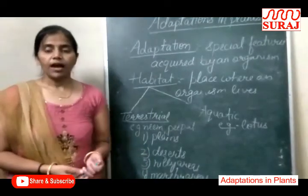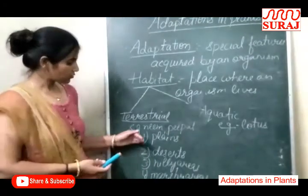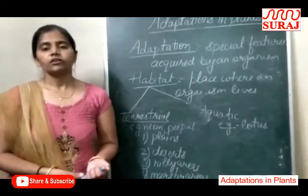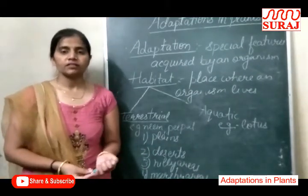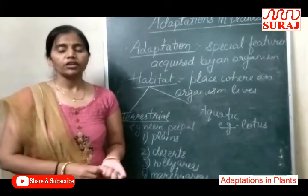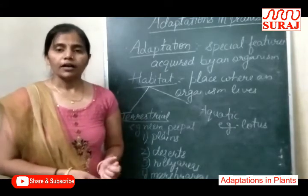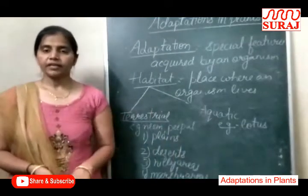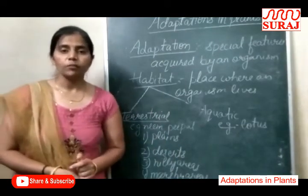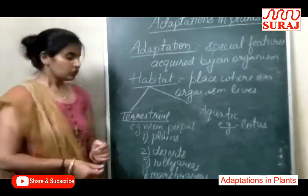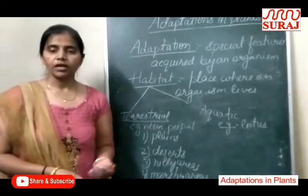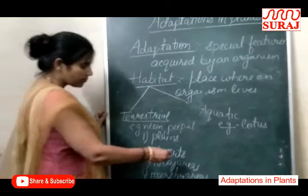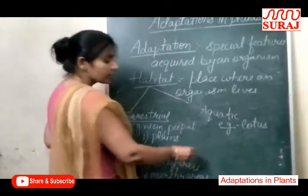Second is Desert plants — vo plants jo desert mein grow karte hain. Yahan pe bahut kam barish hoti hai, little rainfall hoti hai, jiski wajah se jo roots hoti hain, vo deeply under the ground hoti hain — ground mein neeche tak penetrate kar jaati hain. And the leaves are modified into spines — vo spines mein, kaanton mein convert ho jaati hain. Example: Cactus.